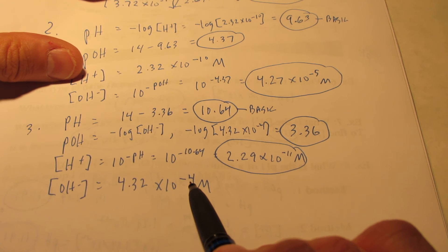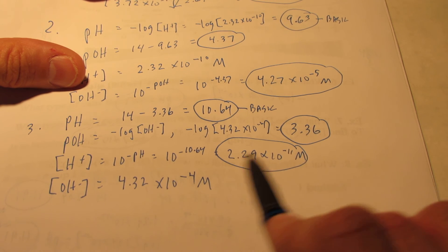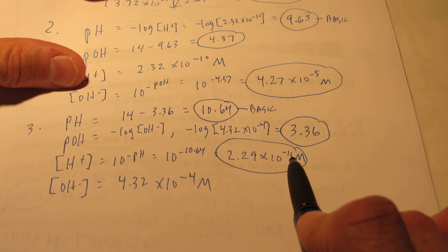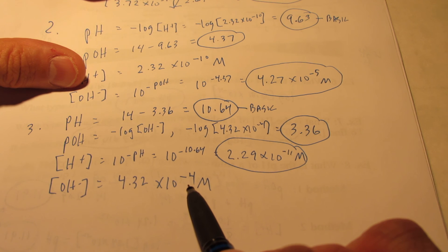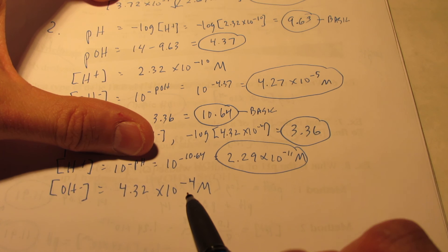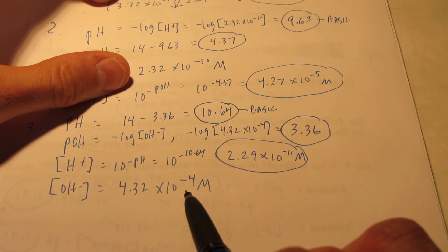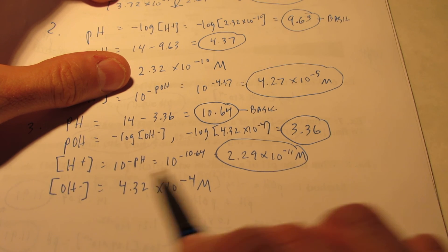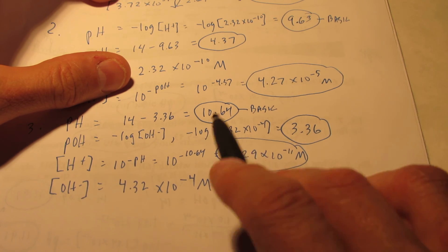Do you see how the hydroxide concentration is bigger than the hydronium ion concentration? I mean, 10 to the negative 4th is, boy, 7 powers of 10 bigger than 10 to the negative 11th. So, that is very much basic. We have a lot more hydroxides than we do hydroniums. That's why it's basic.